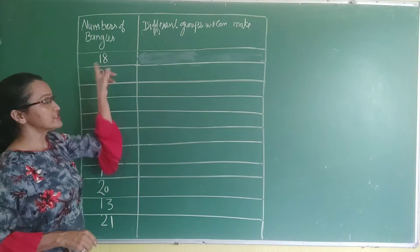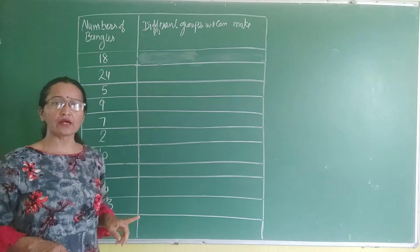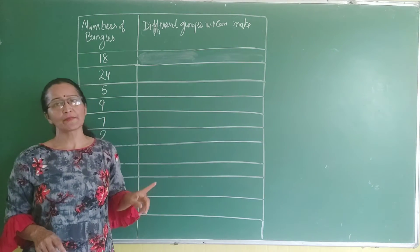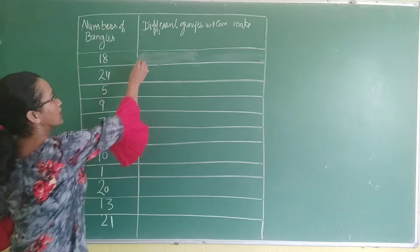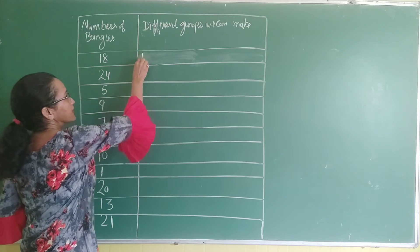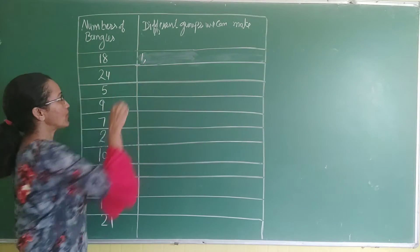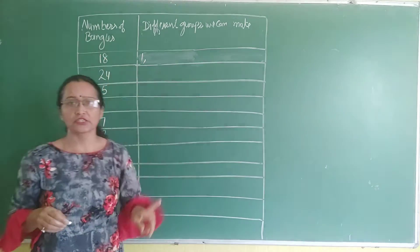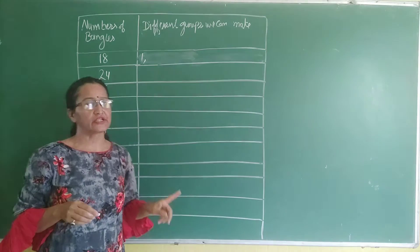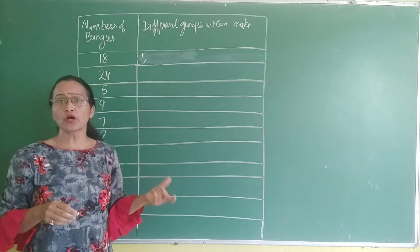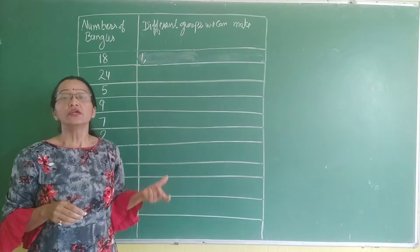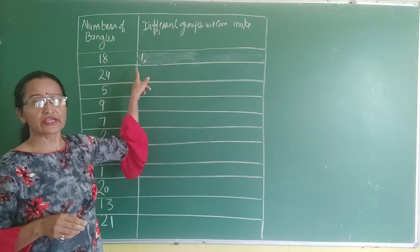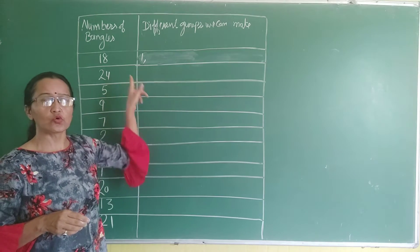Now, when we make a group of 18 bangles, we can make a group of one. When we make a group of one, the total groups we have are 18. Next, we make groups of two each. When we divide 18 by 2, we get 9 groups.